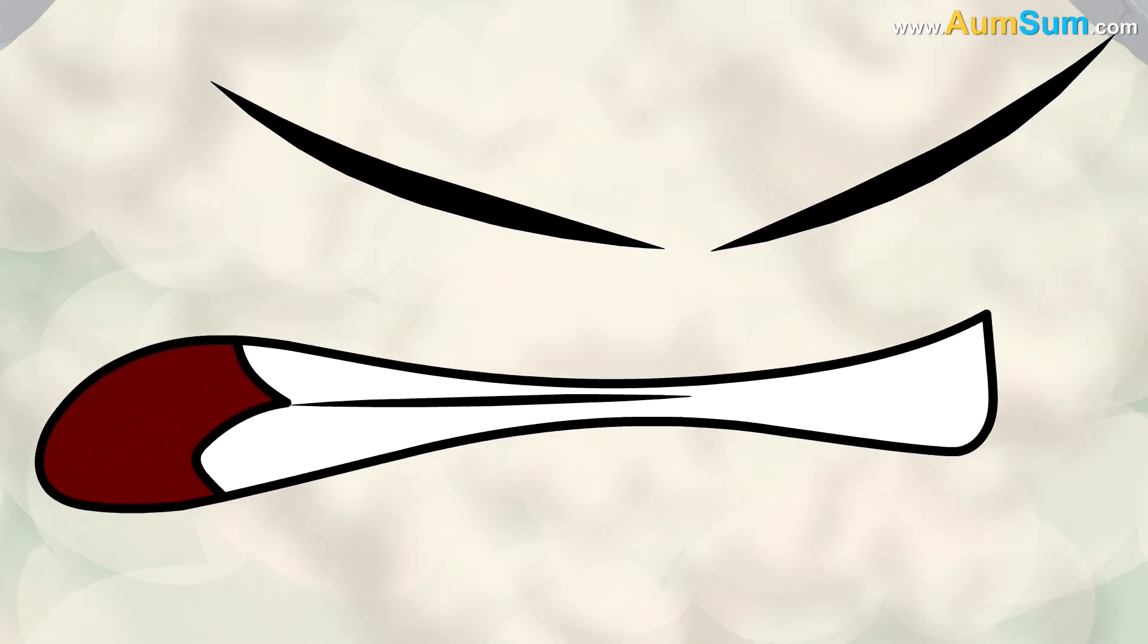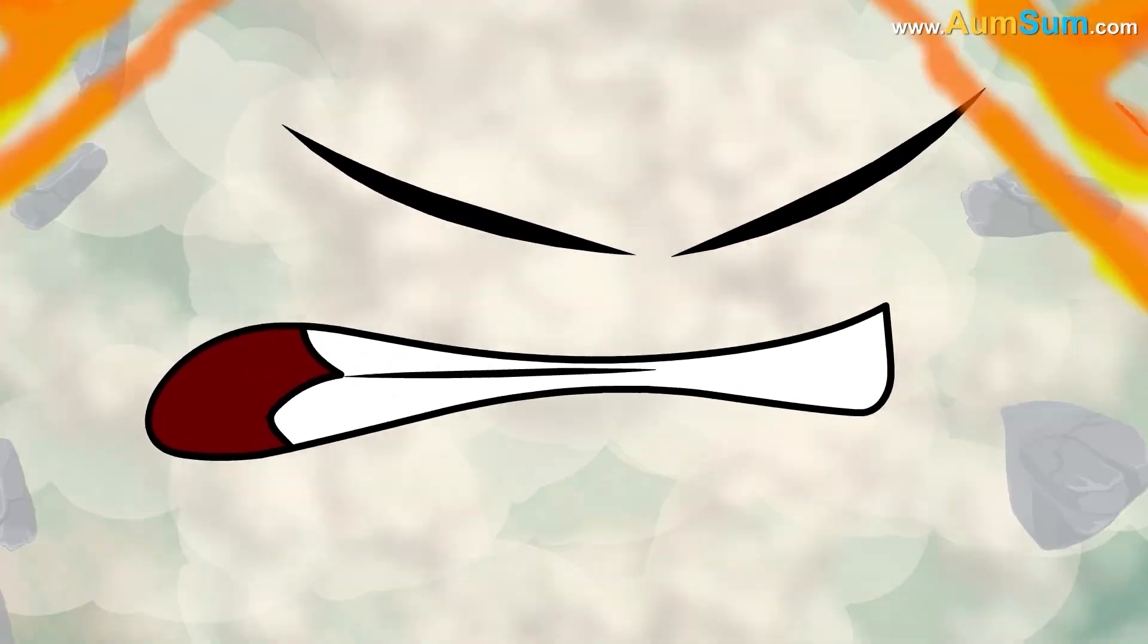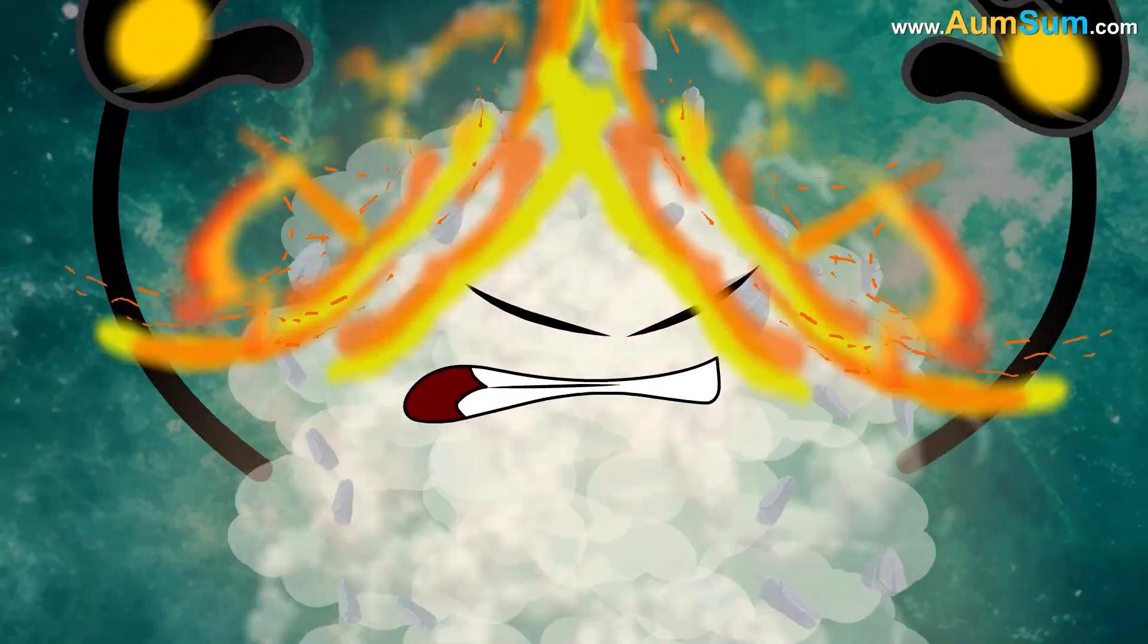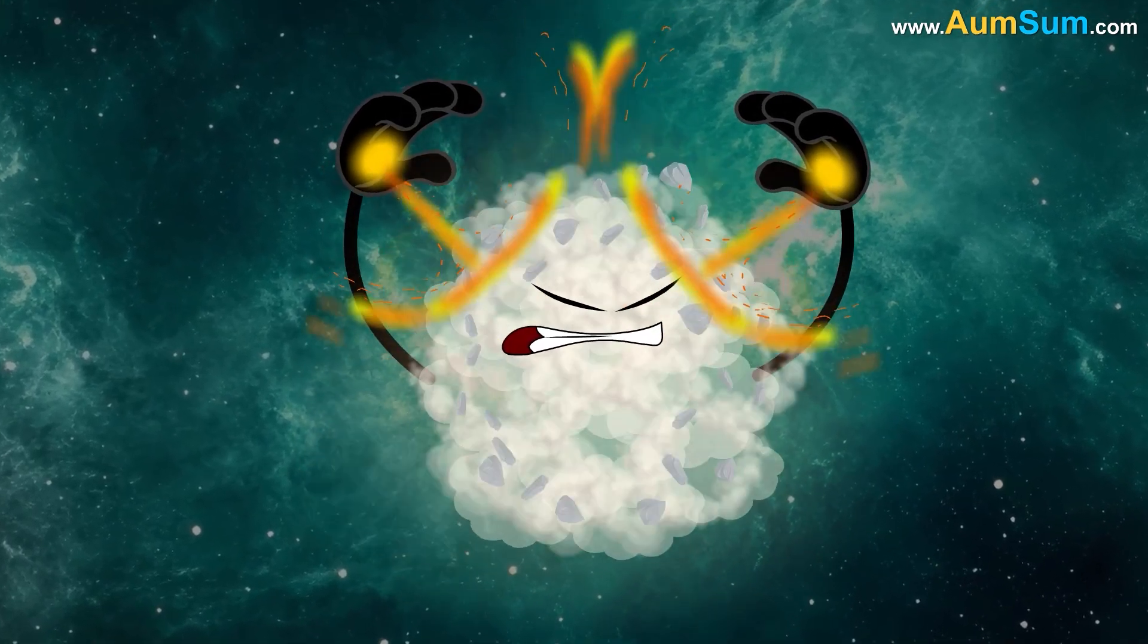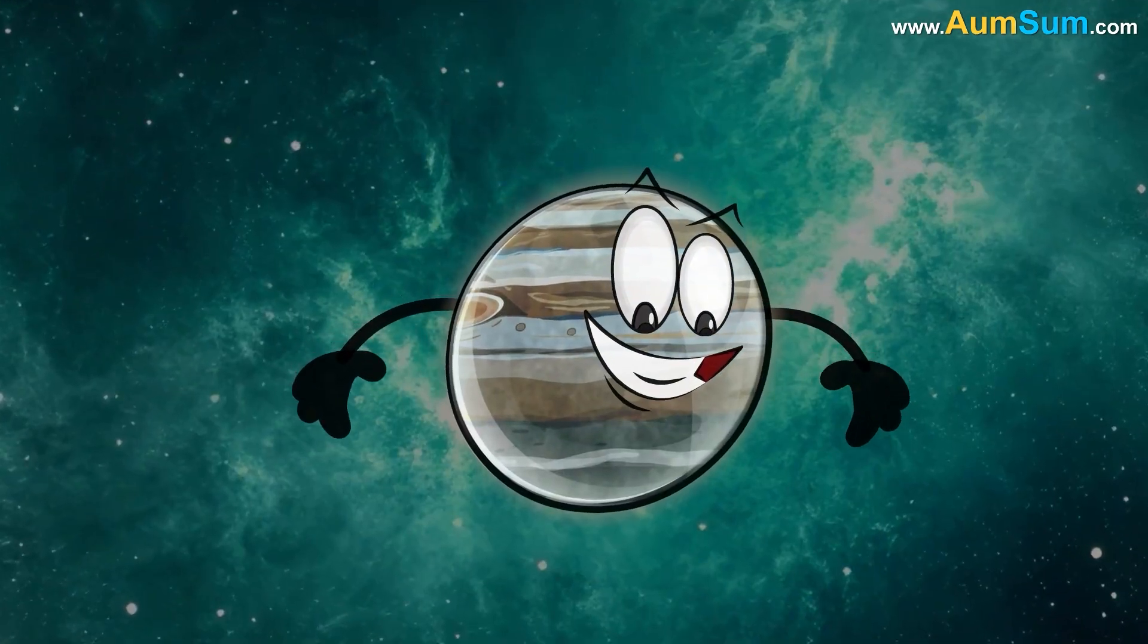Secondly, Jupiter's stronger gravitational pull compresses its gases and materials more than Saturn's, packing them into a smaller volume at higher pressures. This increases the planet's overall density.